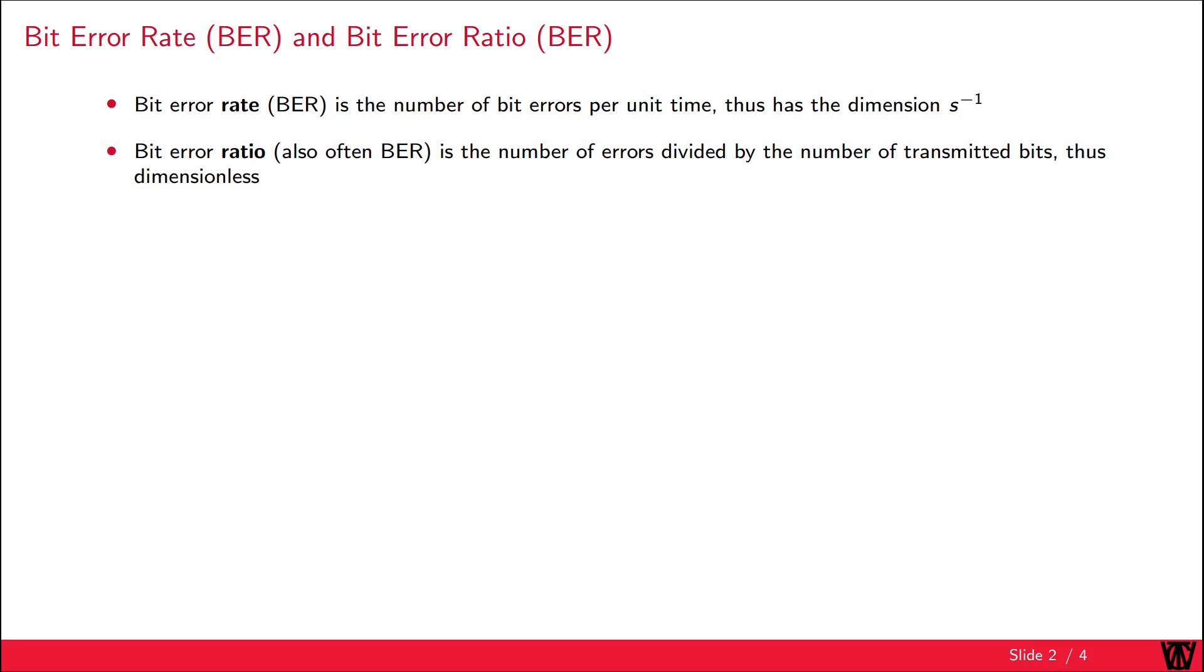The bit error ratio, which is also called BER, is the number of bit errors divided by the total number of transmitted bits, thus it is dimensionless. In other words, the bit error rate is the bit error ratio multiplied by the bit rate.